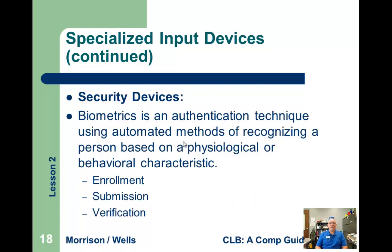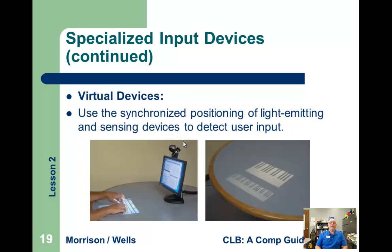Security devices — biometrics — can recognize a person based on their thumbprint, retina, or voice pattern. Virtual devices, as mentioned earlier, include a keyboard projected onto a tabletop. Also a keyboard like a piano or an organ could be projected onto a tabletop.